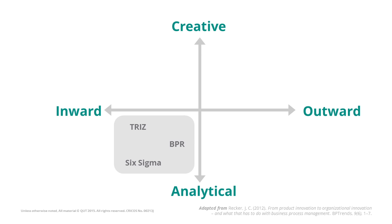There are analytical techniques which have a more outward way of dealing with process improvement. A good example is Lean, where it is the voice of the customer that is the starting point for reasoning about process improvement. Another approach that also fits within this quadrant is reference modelling, where you would take an industry standard and try to impose that on your organisation from the outside to the inside, but it is still an analytical approach in the sense that there are tools and techniques to start comparing a reference model with your existing process.